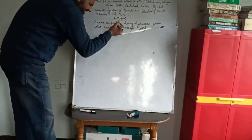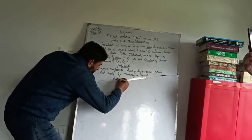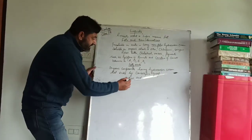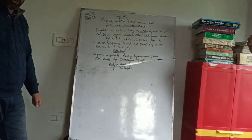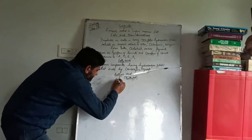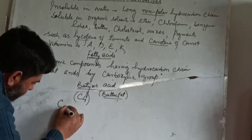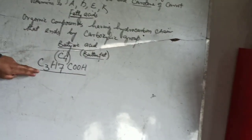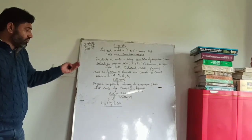For example, I will cite the example of one of the simplest fatty acids - that is butyric acid. This butyric acid is present in butter, that is why it is also known as butter fat. This butyric acid consists of four carbon atoms - it is a C4 compound. Its molecular formula is C3H7COOH.